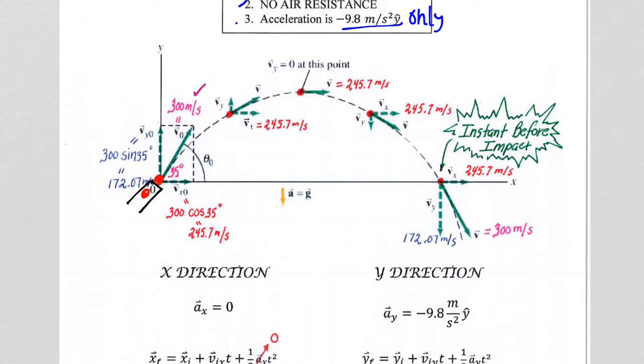We know from our vectors chapter that the initial velocity in the y direction is 300 sine 35. So our 35 degree angle is the angle that it's being shot at.